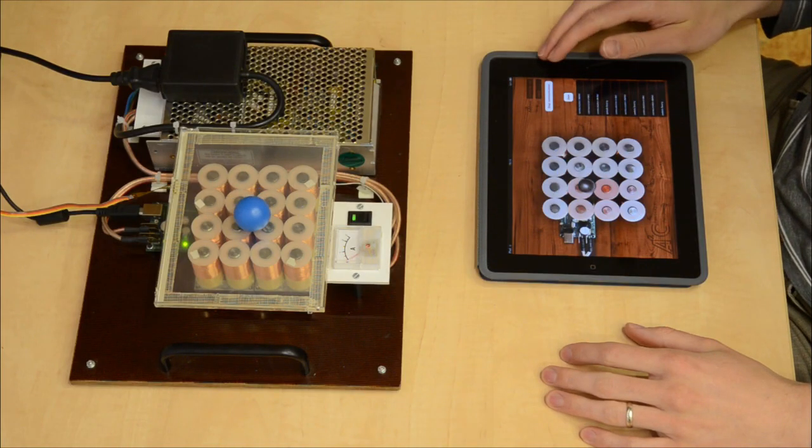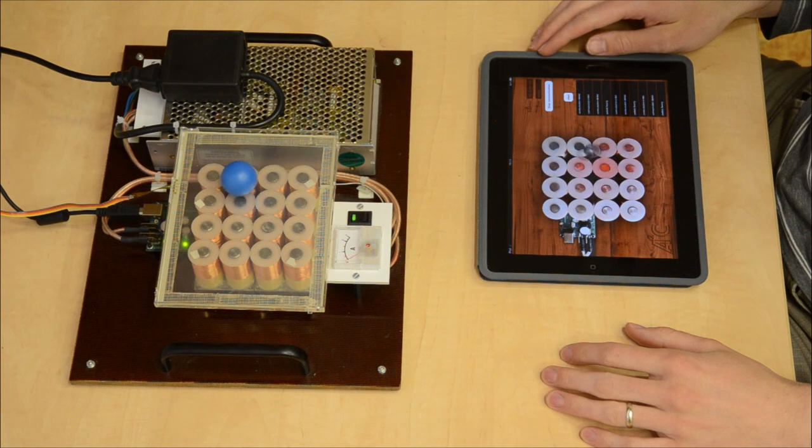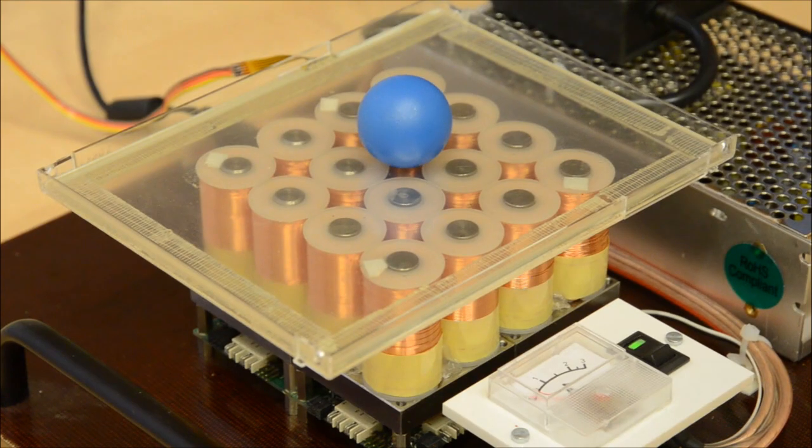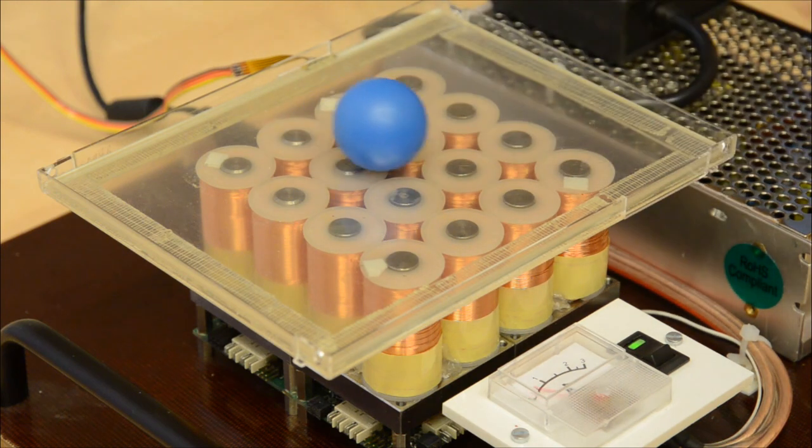And now MATLAB controls the real system, trying to follow circled trajectory. We use iPad to provide user interface, here to visualize currents flowing through coils and the position of the ball. Here you can see how our controller deals with disturbances.